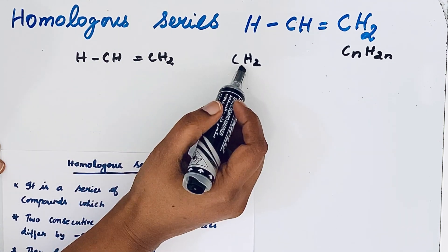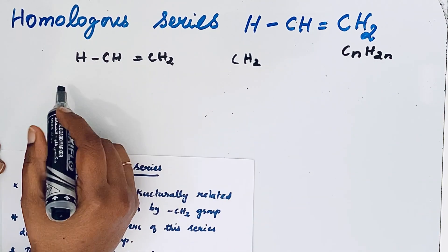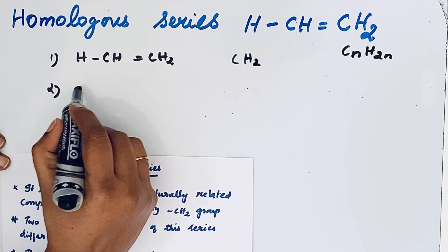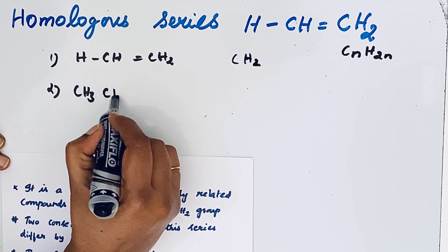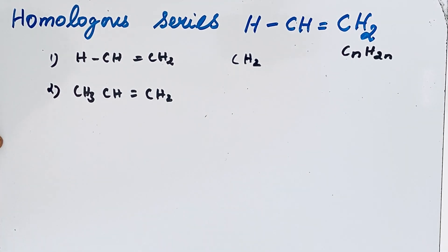So this CH2 group can be added to this hydrogen. When you are adding, we will get CH3-CH=CH2. So this is propene.